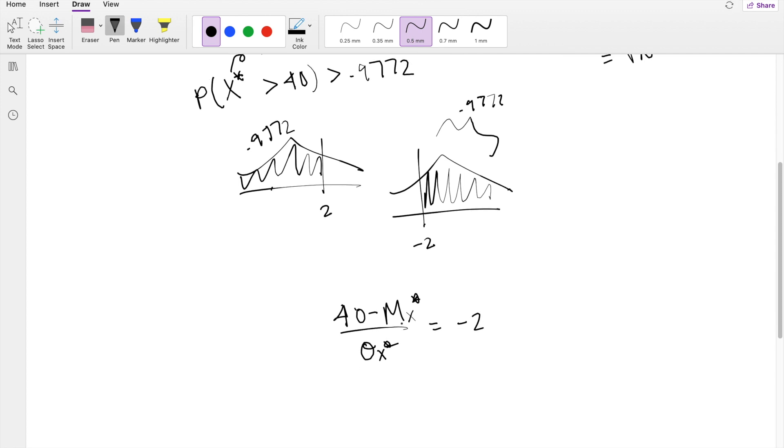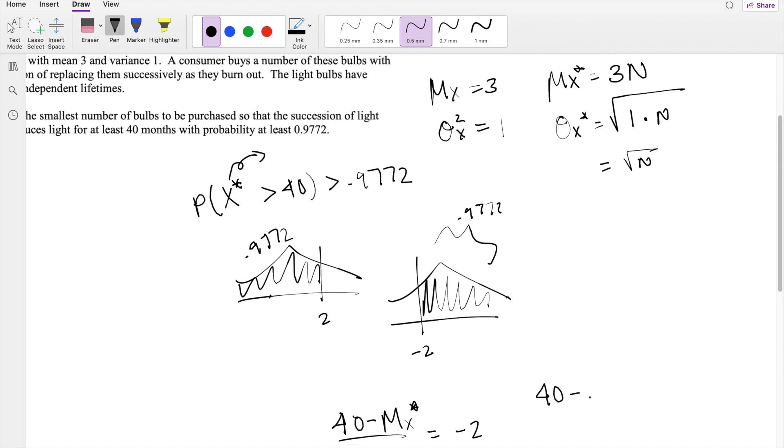Okay, and we know what mean is now, we figure it out, except we don't know what n is. 3n divided by standard deviation, which is root n, is equal to negative 2.